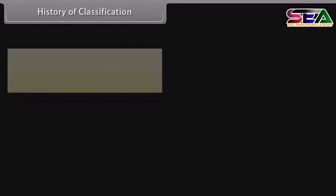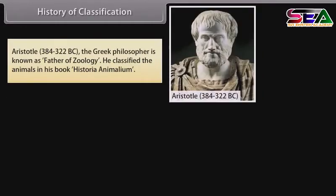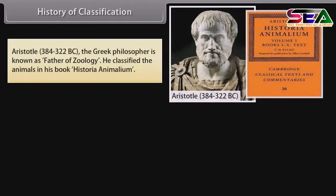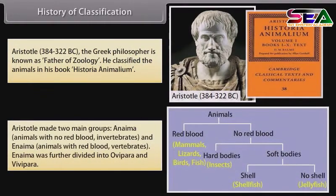History of Classification. Aristotle (384–322 BC), the Greek philosopher, is known as the father of zoology. He classified animals in his book Historia Animalium. Aristotle made two main groups: Anima, animals with no red blood (invertebrates), and Anima, animals with red blood (vertebrates). Anima was further divided into ovipara and vivipara.